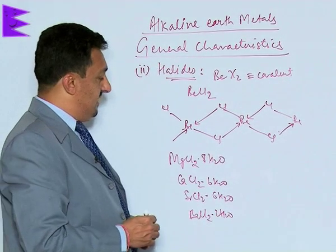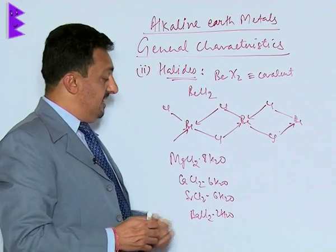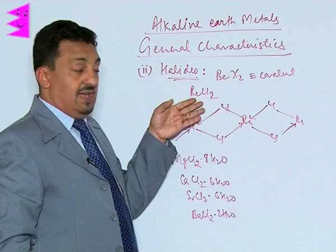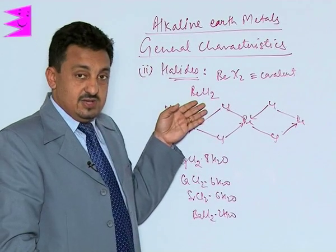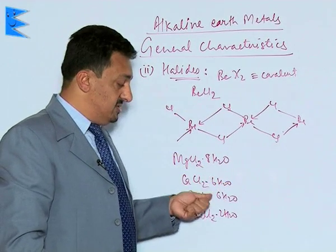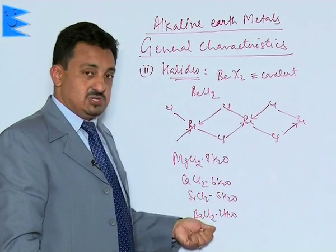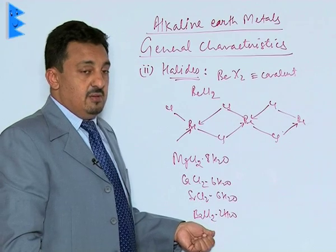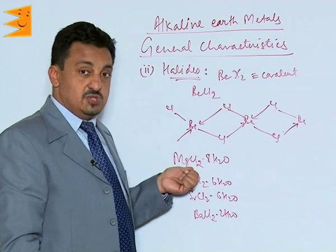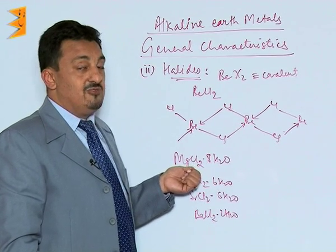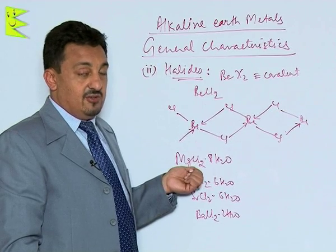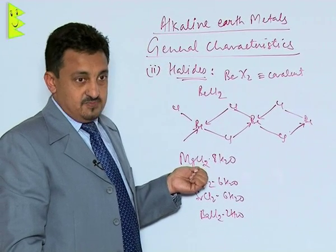So we find that they are ionic in nature, but beryllium halides are covalent. They get hydrated and lose water after crystallization on heating, but beryllium and magnesium usually get solvated or hydrolyzed when they are heated.